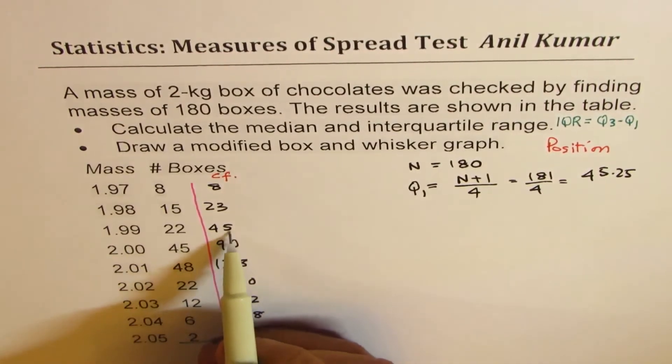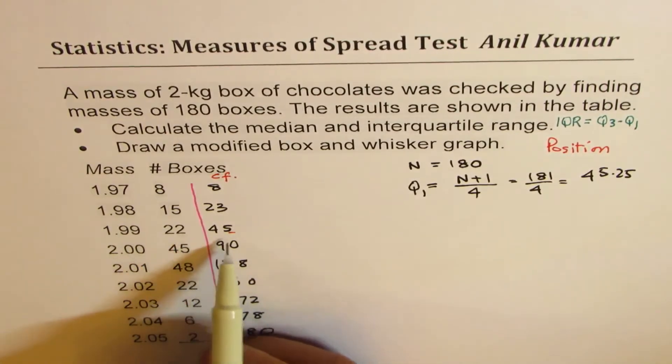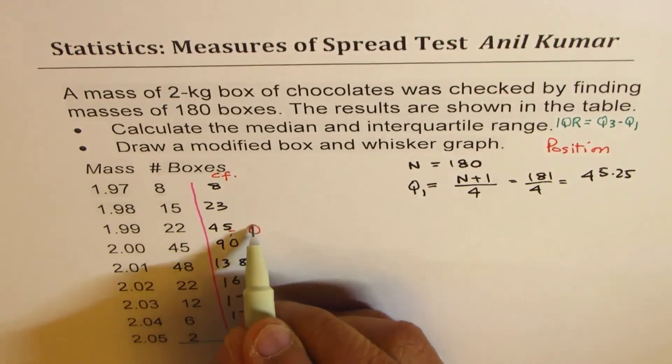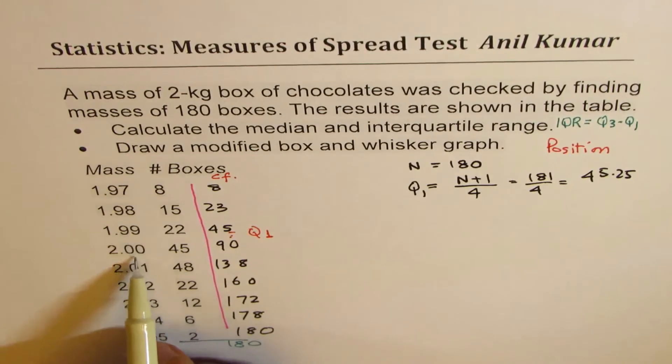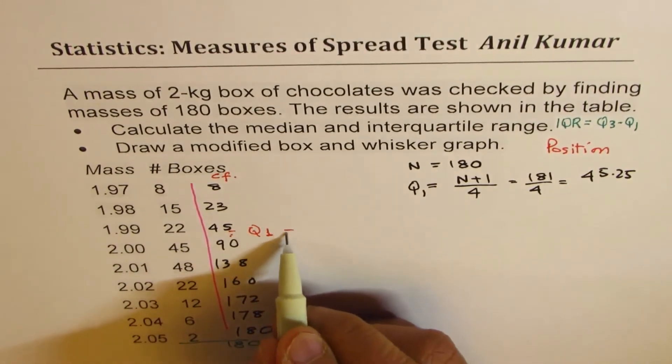So 45 is here, so it is more than this, somewhere in between. So that means average of these two values.